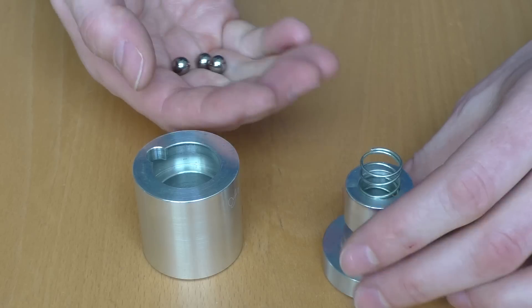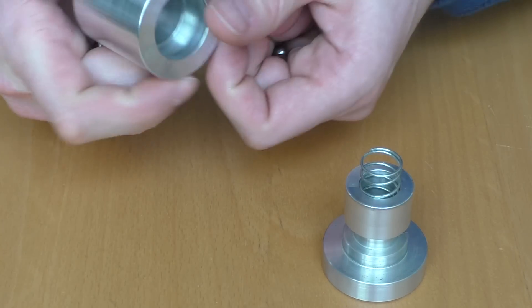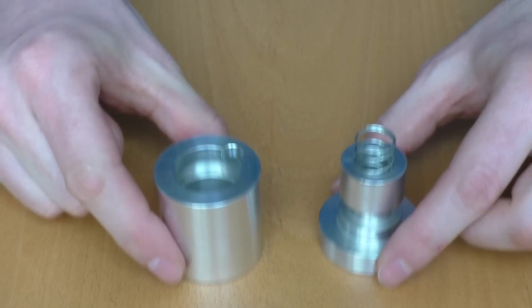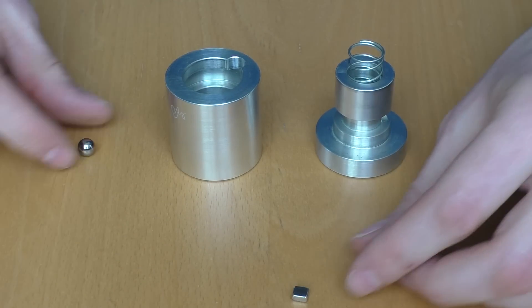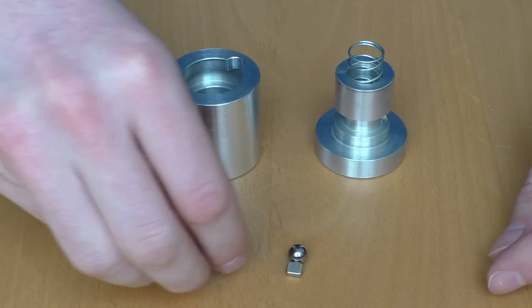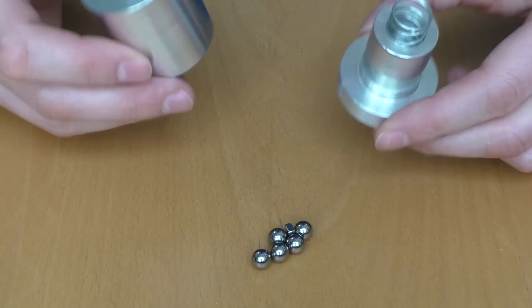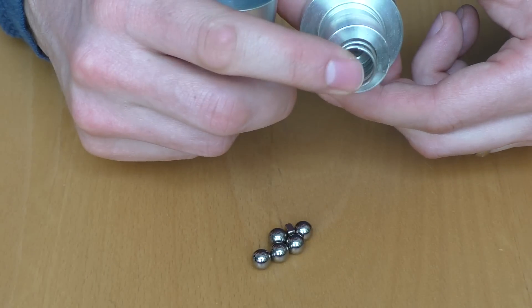So, there are, overall, five steel balls inside. Just put them here on the small magnet, that they will not get lost. And these are the two parts, and the additional spring.